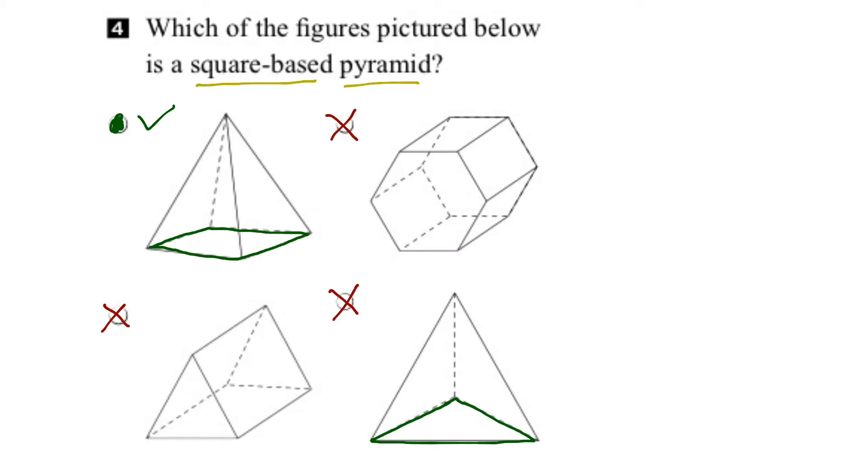And you might also be wondering how come this shape here isn't a pyramid because remember I said it comes to a point. But this one has two points at the top, therefore it's not a pyramid, it's a prism.